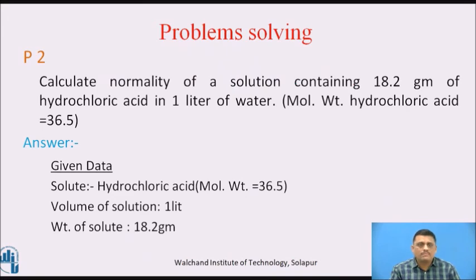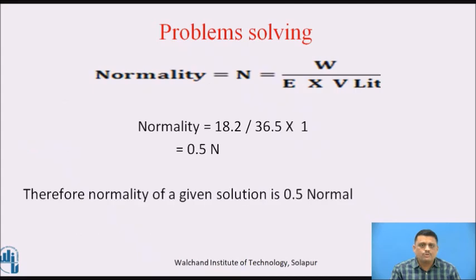Problem 2: Calculate the normality of a solution containing 18.2 grams of hydrochloric acid in 1 litre of water. Given data: molecular weight of HCl = 36.5, volume = 1 litre, weight of solute = 18.2 g. By putting in the values, we get the answer 0.5. Therefore, the normality of the given solution is 0.5 normal.